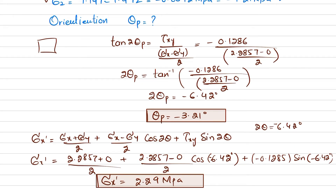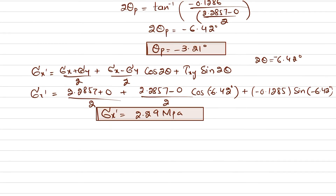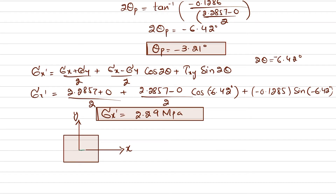So sigma_x' corresponds to sigma 1 on that face. Now we define the orientation. This was the initial state of stress with the original x-axis and y-axis. The principal stress lies at theta p = minus 3.21 degrees — the negative sign means clockwise rotation. So the new x' axis rotates 3.21 degrees clockwise, and the new y' axis rotates with the same theta p.